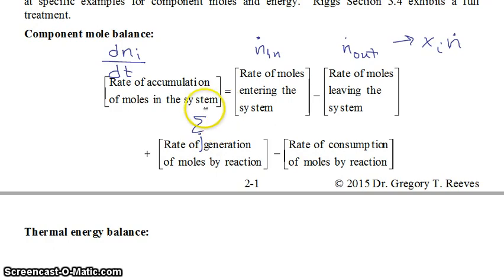If we have j equals 1 to capital N reactions, then each term would be the stoichiometric coefficient of that component for that particular reaction, so component i for reaction j times the rate of reaction j. And that would be your component mole balance as an example.